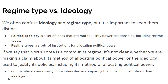It's also easy to confuse regime type and ideology, but it's really important to keep them distinct. Political ideology is a set of ideas that attempts to justify power relationships — a set of values that we appeal to in order to say these regime types are good and these regime types are bad. But regime types themselves are sets of institutions for allocating political power.